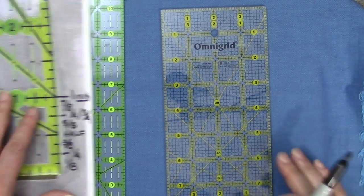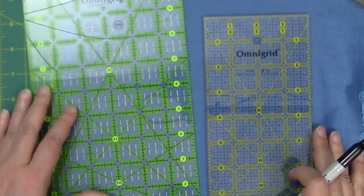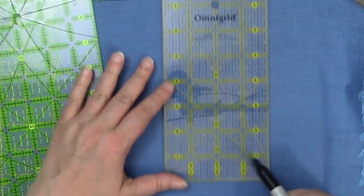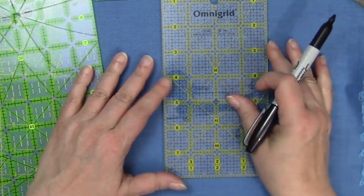That being said, this other one does allow you to see things, keep it on grain or see it closer because they give you all this grid work to work with. The other thing about rulers that you may not know is they also can show you how to cut a 45 degree angle or a 60 degree angle or a 30 degree angle.